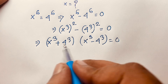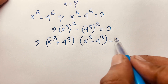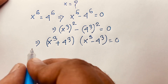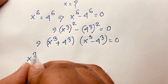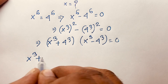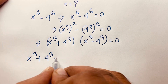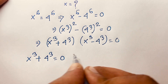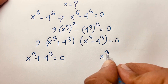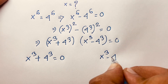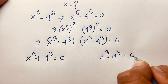We know that a squared minus b squared equals a plus b times a minus b. Now here we find two cases: the first case is x to the power three plus four to the power three is equal to zero, and the second case is x to the power three minus four to the power three is equal to zero.